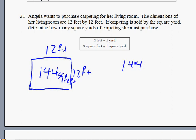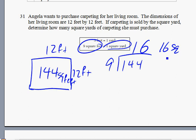And in order to convert it into yards, you can divide it by 9 because 1 square yard is equal to 9 square feet. So 9 going into 144, that's approximately 16. Therefore the answer is 16 square yards.